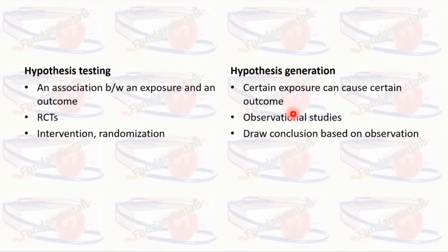Experimental studies are randomized controlled studies with interventions. These are the most robust of studies and the only hypothesis testing study design, hence are considered the gold standard. Observational studies are weaker and can only generate a hypothesis.